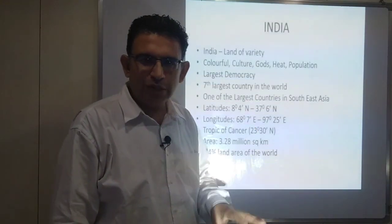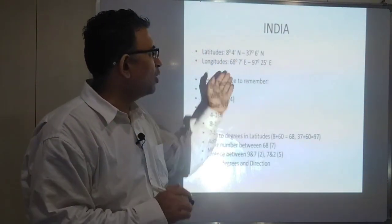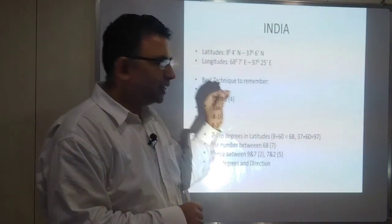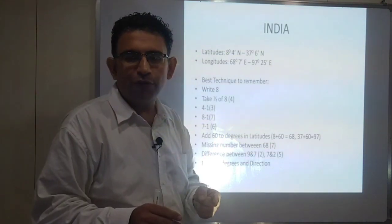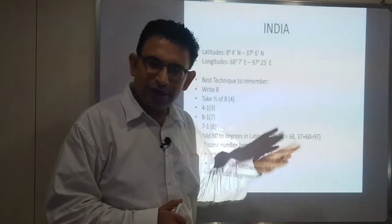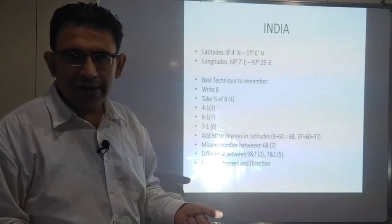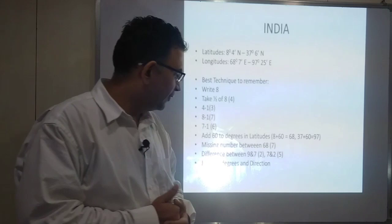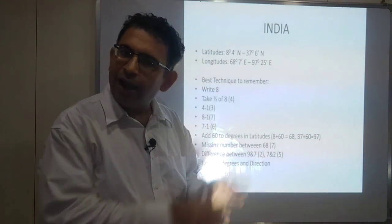It looks complicated about the latitude and longitude, but we will see how to remember it in the most beautiful way. Now the main part — let's see the latitude and the most talked-about question: how do we remember these numbers which seem very complex? I have shared my technique. We write eight, take half of that — it's four — then deduct one from four to get three, deduct one from eight to get seven, deduct one from seven to get six, and we add 60 degrees to get the longitude degrees.